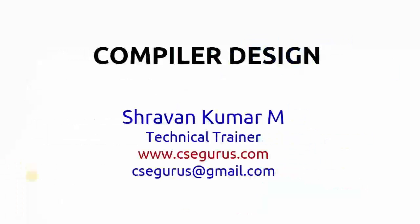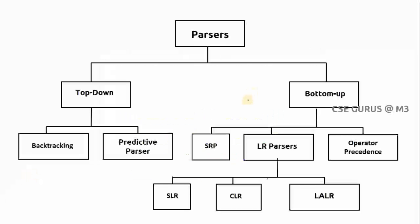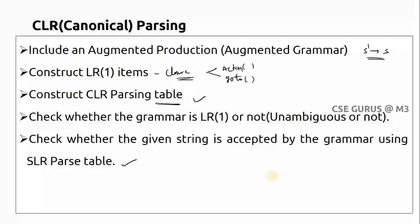Welcome to the video lectures on compiler design. In our previous lectures we covered top-down parsers, bottom-up parsers including shift-reduce parsing, and we completed SLR parsers. Now we'll see what is CLR parser — the canonical LR parser. In SLR parser we used LR(0) grammar, meaning no lookahead symbol.